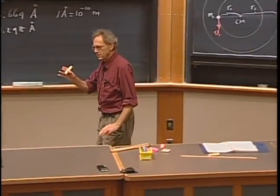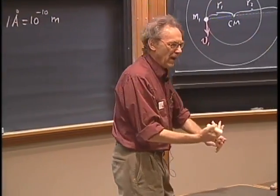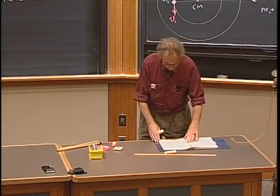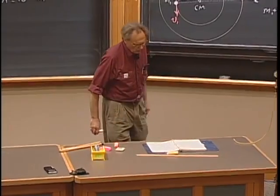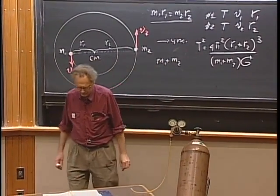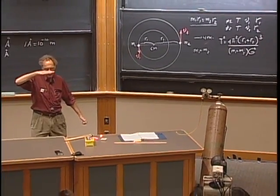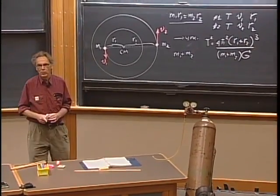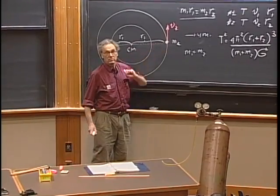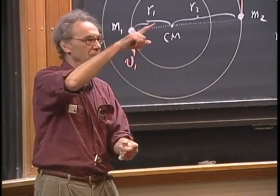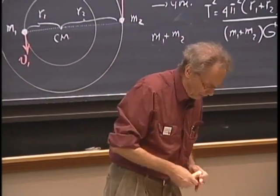Think about this: out of the Doppler shifts of this binary system, you get the orbital radii, the velocities, the orbital period, and you even get the masses of the individual objects. When you observe from Earth, you are probably not in the plane of the orbit. If the orbit is tilted, the radial velocity you measure will be lower than v2. If the orbit were face-on — going around like this — there would be no radial velocity at all. So the inclination of the orbit is very important, and that is a key issue for astronomers.